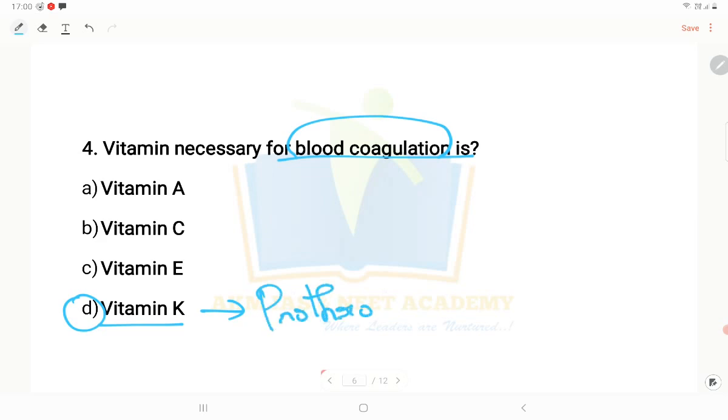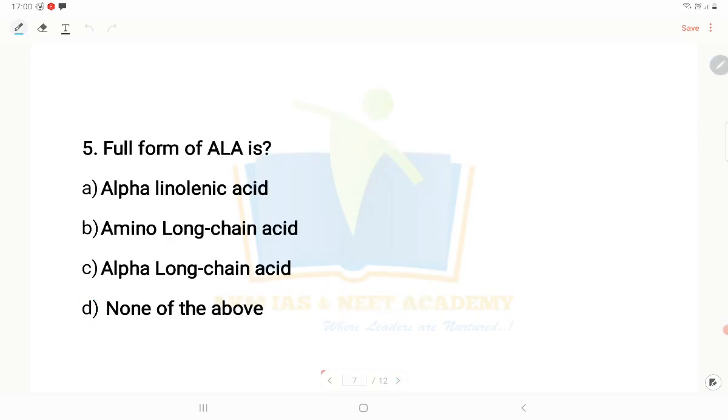Prothrombin converts to thrombin, and thrombin converts fibrinogen protein to fibrin protein, which helps in blood clotting.